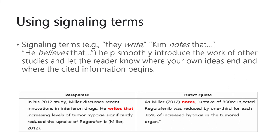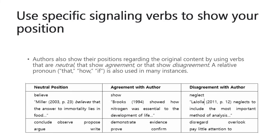There are many specific signaling verbs, because when signaling about an author in research work, we generally take three positions: neutral, agreement, or disagreement. In the neutral position, we use terms like 'believe,' 'concluded,' 'observe,' 'propose,' 'argue,' 'write.' When in agreement, we use 'show,' 'demonstrate,' 'evidence,' 'prove,' 'confirms.' When showing disagreement, we use 'neglect,' 'disregards,' 'overlooked,' 'pay little attention,' etc.